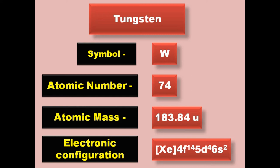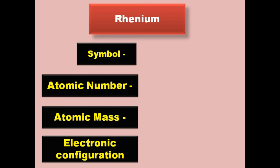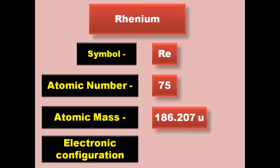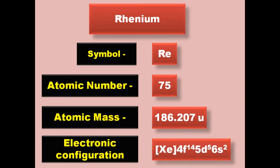Rhenium has symbol Re, atomic number 75, atomic mass 186.207, electronic configuration [Xe] 4f14 5d5 6s2. Rhenium is a transition metal and exists in solid form at room temperature.